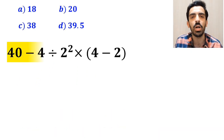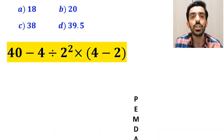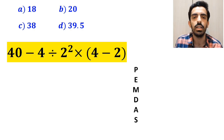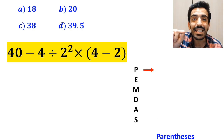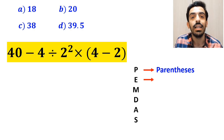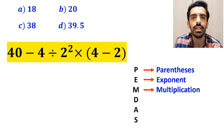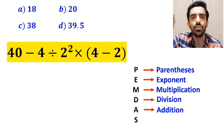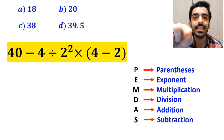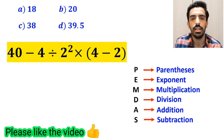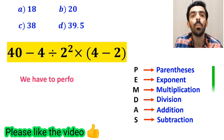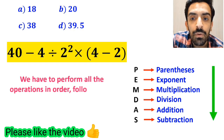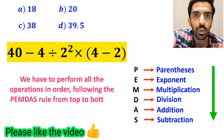Now let me show you how to solve this expression properly. To solve this problem, we must follow PEMDAS. In this rule, P stands for parentheses, E stands for exponent, M stands for multiplication, D stands for division, A stands for addition, and S stands for subtraction. We have to perform all operations in order following PEMDAS from top to bottom.